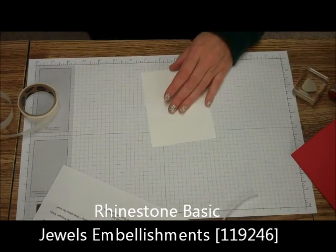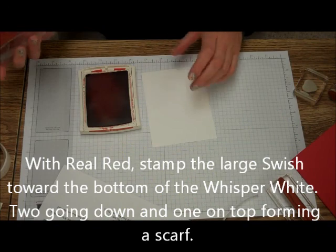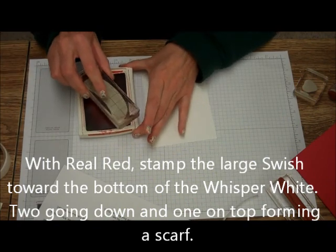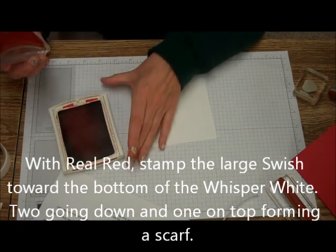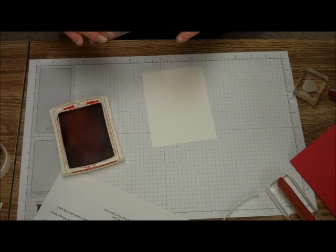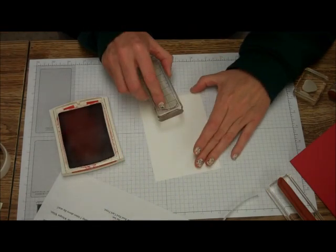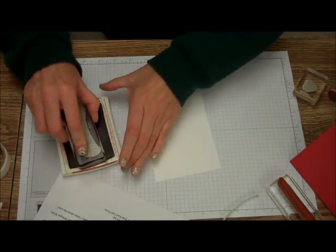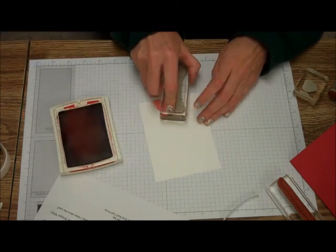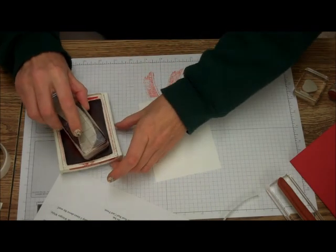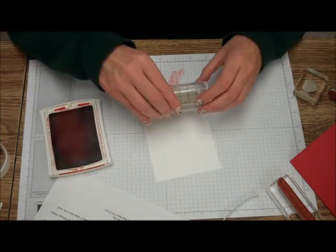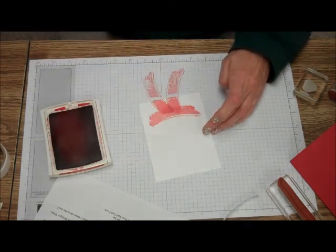So the first thing you want to do is get your Swish stamp and ink that up with the Real Red. Again, I start from the bottom, so we're going to make the scarf first. Just going to put two, not all the way on, then we're going to make like a smile with the scarf. There we go.